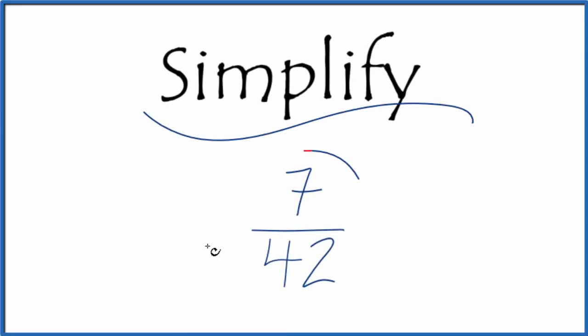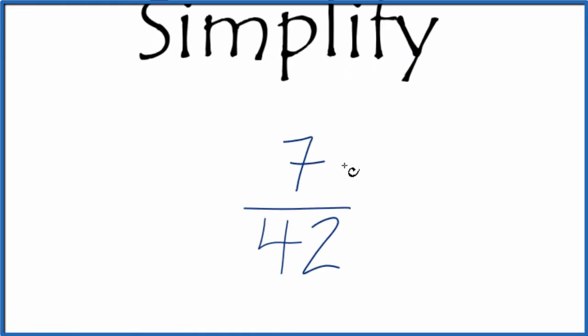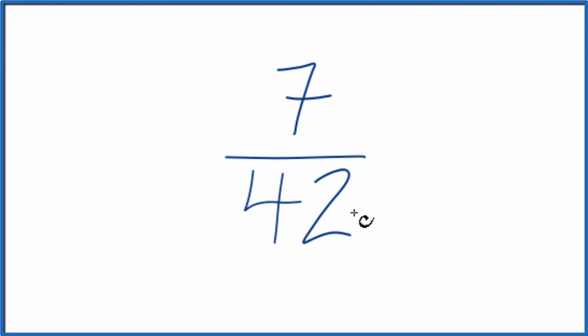Let's simplify the fraction 7/42. We want to find another fraction that's equivalent, has the same value as 7 over 42, just that we've reduced it to its lowest terms.